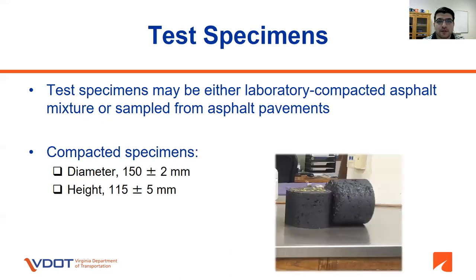Test specimens may be either laboratory compacted asphalt mixture specimens or sampled from asphalt pavements, for example cores. The compacted specimens will have a diameter of 150 plus or minus 2 mm and a height of 115 plus or minus 5 mm.